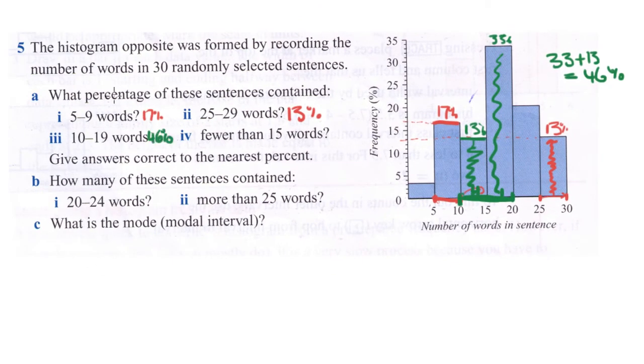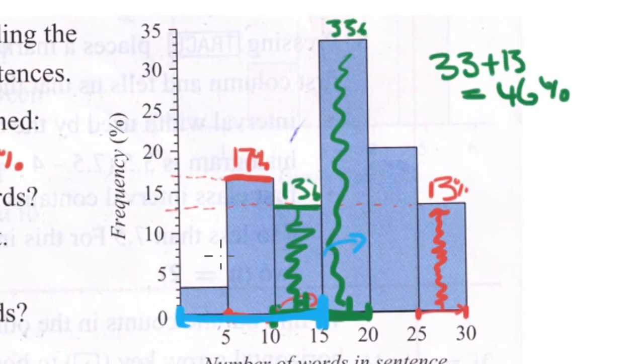The next one is fewer than 15. We want everything from this point 15 downwards. We can count the height of this bar because the 15 is included in this one here. So this is 14 going downwards.